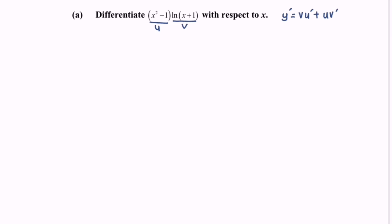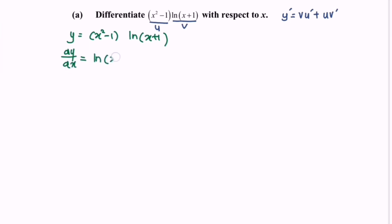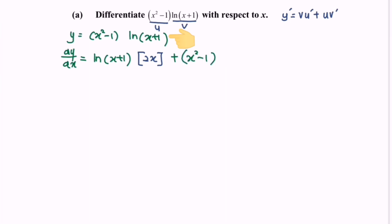Now let's begin. Let y equals (x squared minus 1) multiplied with ln(x plus 1). So dy/dx equals v, which is ln(x plus 1), multiplied by u prime, which is 2x, plus u, which is (x squared minus 1), multiplied by the derivative of ln(x plus 1), giving 1 over (x plus 1). Remember to differentiate the internal function, which gives 1.